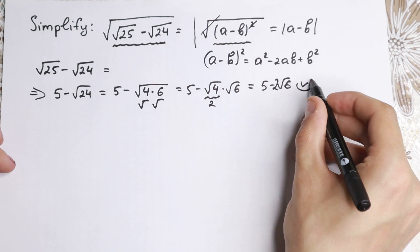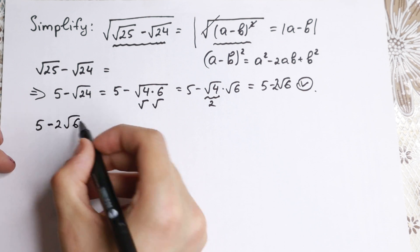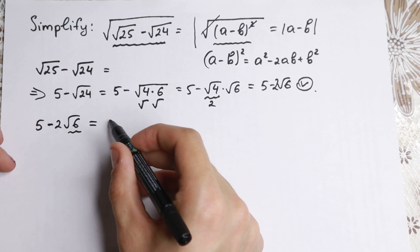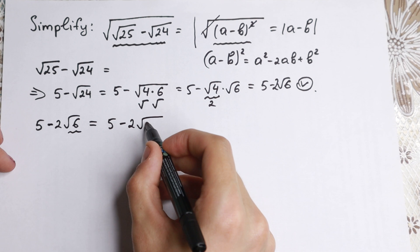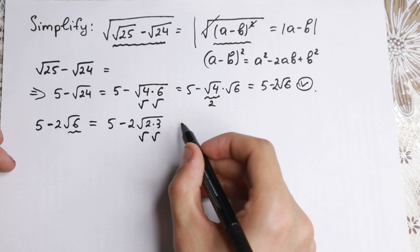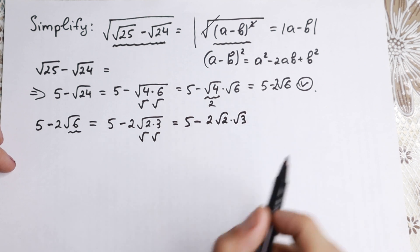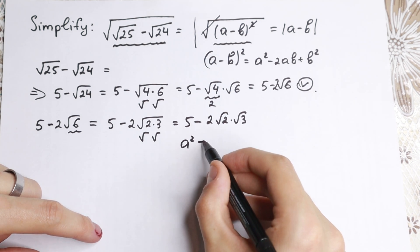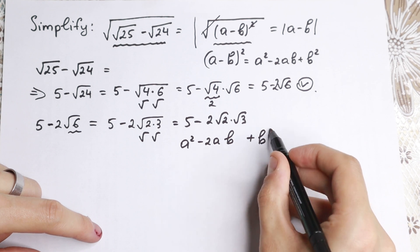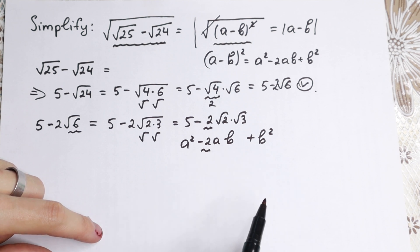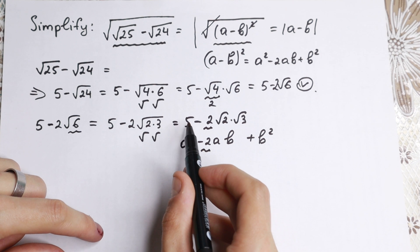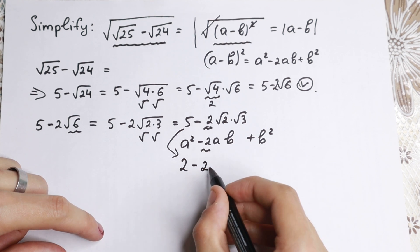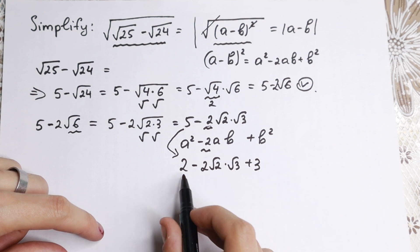This is the maximum we can simplify right now — 5 minus 2 square root of 6. But let's use a little trick. We can write 6 as 2 times 3, so this becomes 5 minus 2 times square root of 2 times square root of 3. And then I want to write 5 as 2 plus 3. So the expression becomes: 2 minus 2 times square root of 2 times square root of 3, plus 3.